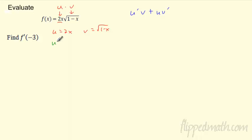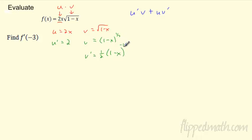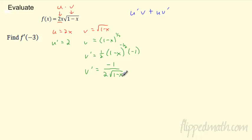Let's plug those in. What is u'? It's just 2. What is v'? Rewrite v as (1-x)^(1/2). So v' by the chain rule: bring the 1/2 in front, freeze the inside, drop to -1/2. Don't forget to multiply by the derivative of the inside — the derivative of (1-x) is -1. Cleaning this up: the negative 1 stays on top, 2 is on bottom, and the negative exponent moves the square root to the bottom: -1 over 2√(1-x).